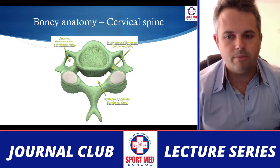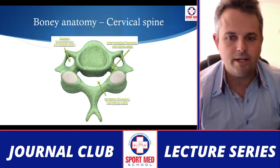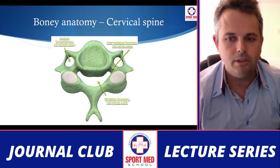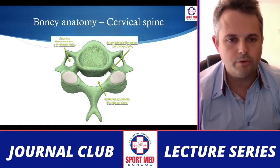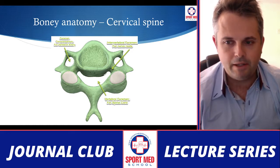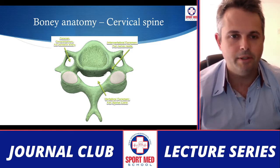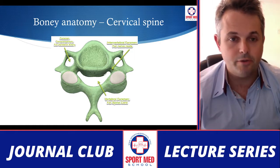We're going to start with the cervical spine and some basic anatomy, specifically looking at the foramen. The cervical spine differs from the lumbar spine in that it has an extra foramen called the foramen transversarium, which allows the vertebral artery to pass through. The vertebral foramen is where the spinal cord passes through, surrounded by cerebrospinal fluid, the subarachnoid space, and the epidural space. The intervertebral foramen, as in the lower spine, is where nerve roots exit and innervate tissues distally.